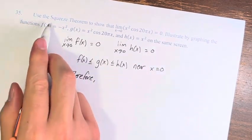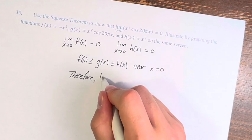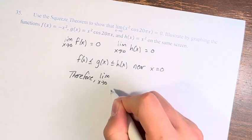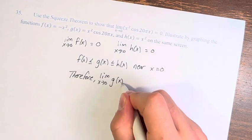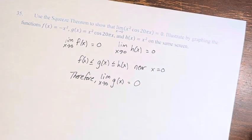Therefore, by the squeeze theorem, the limit as x approaches 0 of g(x) is equal to 0.